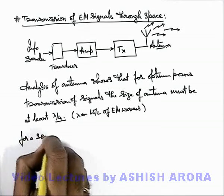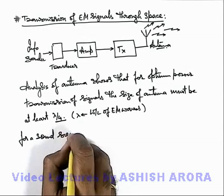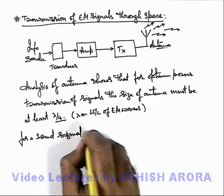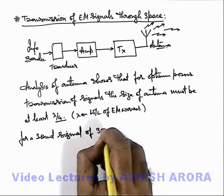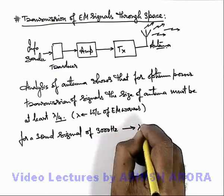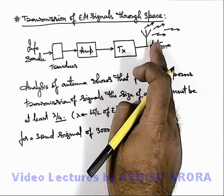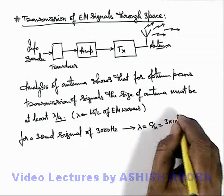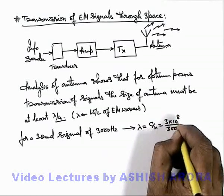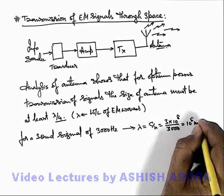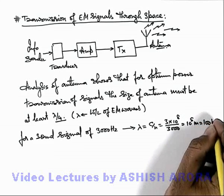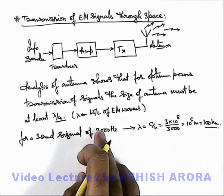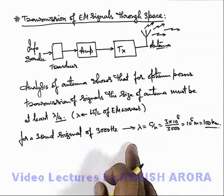For a sound signal, even if we talk about the highest pitch of 3000 hertz, the wavelength corresponding for the electromagnetic wave would be c/ν, that is 3×10^5 meter or about 100 kilometers. So if the wavelength is 100 kilometers for a sound wave when converted into electromagnetic waves,